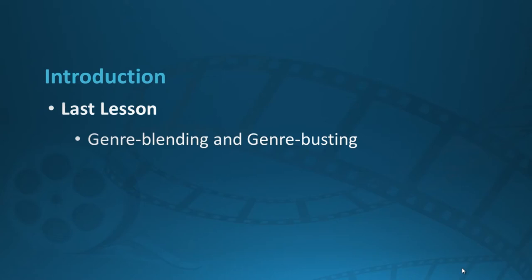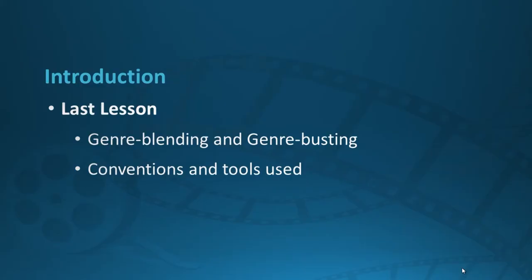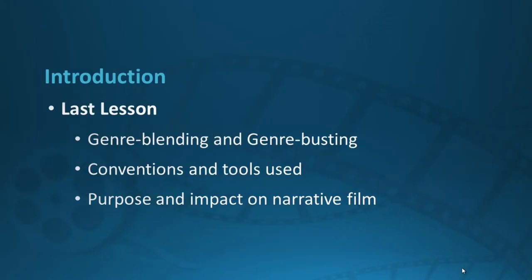In the last lesson, we delved a little deeper into the concept of genre in cinema. We talked about genre blending and genre busting, two very important types or contexts in which genre is used. We discussed the various conventions and tools used to bring forth both genre blending and genre busting, and also delved upon the purpose or impact of this kind of edit in the narrative of a film.